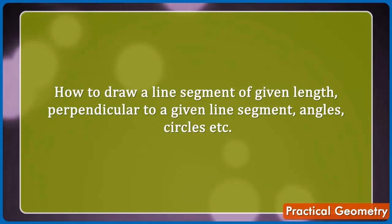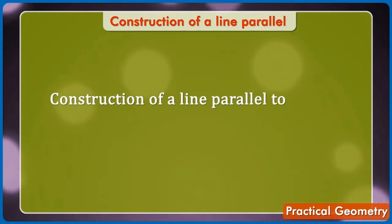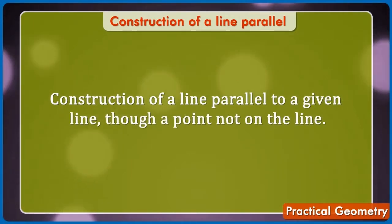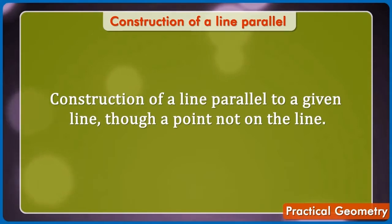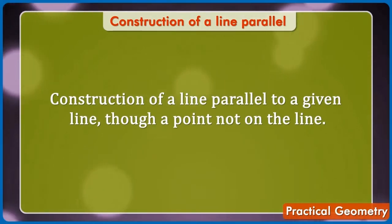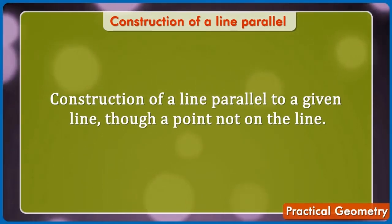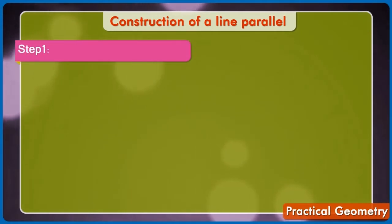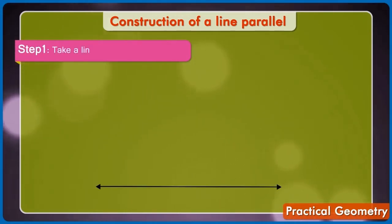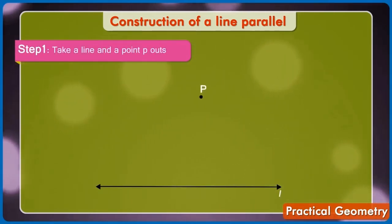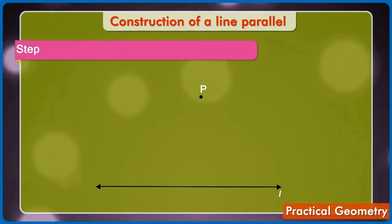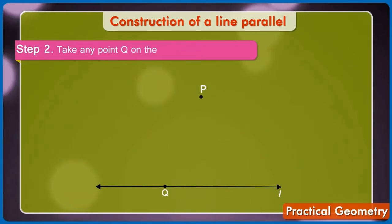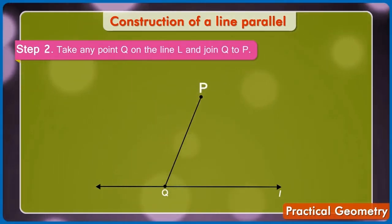So, let's first learn construction of a line parallel to a given line through a point not on the line. Let's do construction of this step by step. Step 1: Take a line and a point P outside L. Step 2: Take any point Q on the line L and join Q to P.